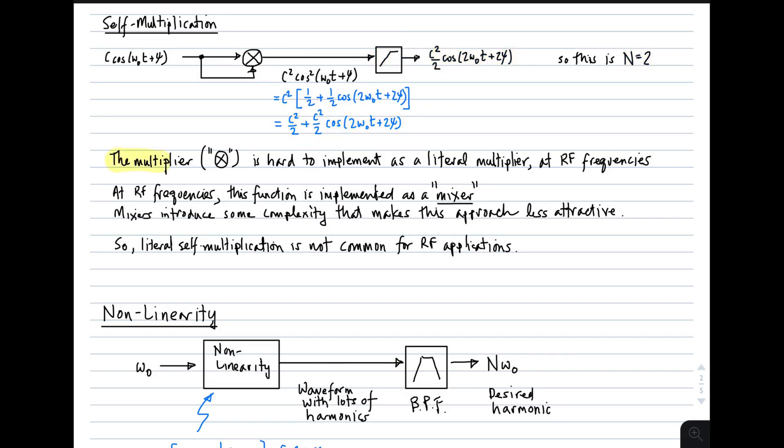So some comments here. First, the multiplier, the thing I'm showing using this symbol, is hard to implement as a literal multiplier. At low frequencies, below RF, it's not difficult. It's not straightforward either, but it's not out of the question. At RF frequencies, this becomes much more difficult. It can be done, but it may not be your first choice. At RF frequencies, the more common way to do this, as opposed to implementing a literal multiplier, is to instead implement the multiplier as a mixer. Now mixers introduce some complexity that makes this approach less attractive for a bunch of reasons. So self-multiplication for RF frequency multiplication is not common. It's done, but it's not as common as the other methods I'm going to show you here.